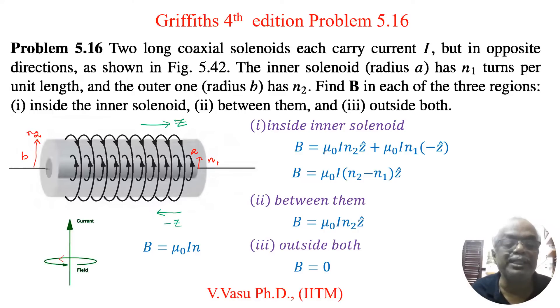This is for inner solenoid. Similarly for outer solenoid current is downwards. So naturally the direction of the magnetic field is the positive Z direction. So I will use different color.